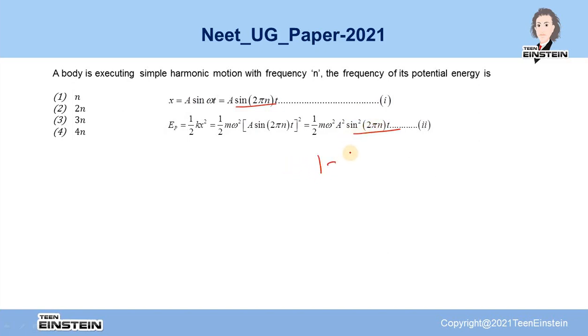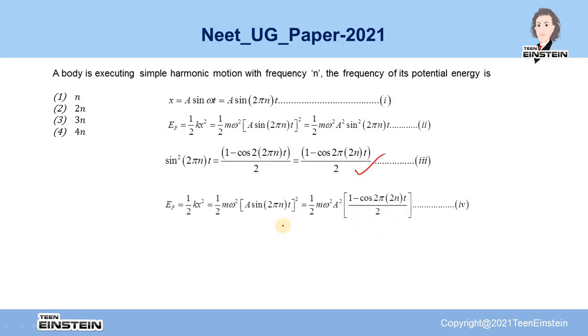To do that, you can use the trigonometric identity: 1 minus cos of 2 theta equals 2 sin square theta. If we use that identity, then this sin square 2 pi n t can be written as this. Hence, the expression for the potential energy would be half m omega square a square into this term. Now, the oscillation of this potential energy is expressed by the term cos of 2 pi 2 n t.